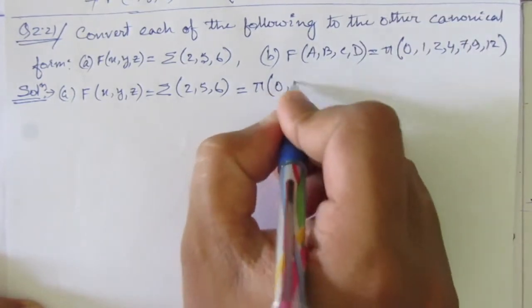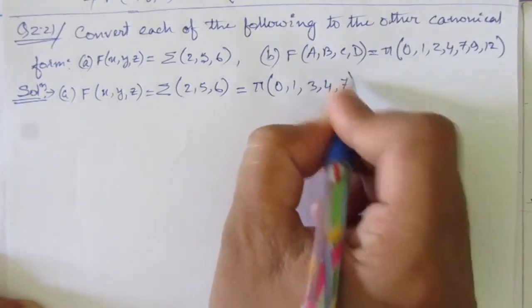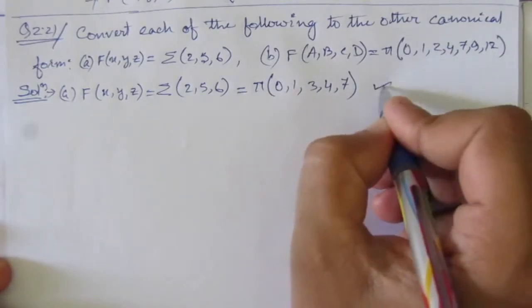So we will have 0, 1, 3, 4, and 7. This is the solution of the first part of the problem.